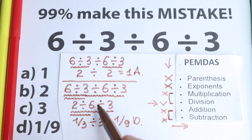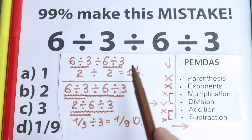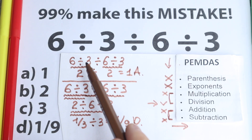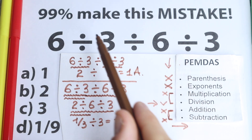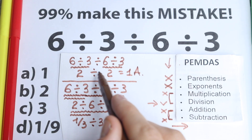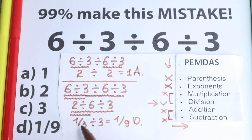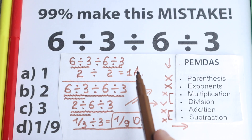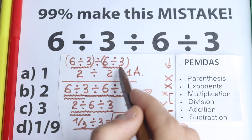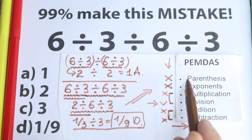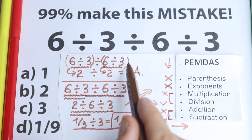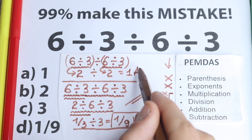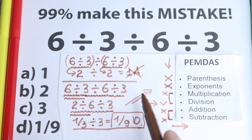So with PEMDAS we get option D (1/9). The other approach — just grouping however we want — gives option A (1), which is the most popular mistake and absolutely incorrect. If you put parentheses around (6÷3) on each side, then option A would be correct, because you'd start with those parentheses. But in our case we don't have any parentheses, so we reject option A.